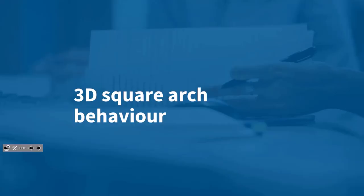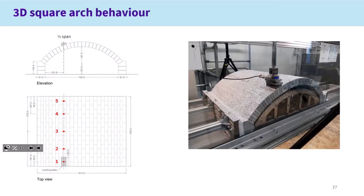Moving on to the 3D square arch behaviour — we're presenting some initial results as this is ongoing work. We started with a bare arch. Geometry is very similar to the previous one — same span, same rise — however, here the bridge is wider at 750 millimetres. We started loading this arch at quarter span and loaded at five different points: each edge of the arch, at one quarter of the width, and in the middle.